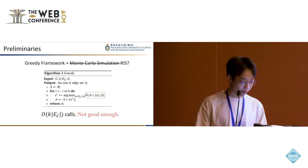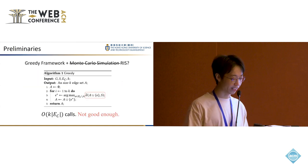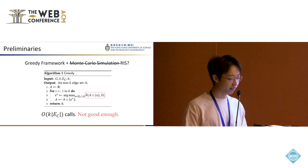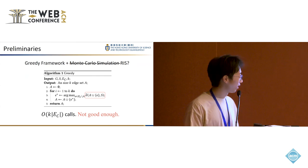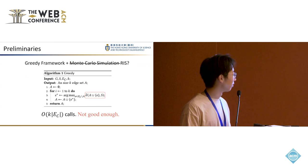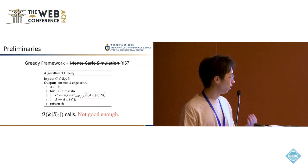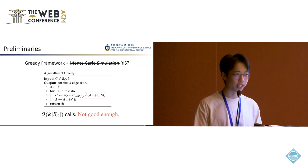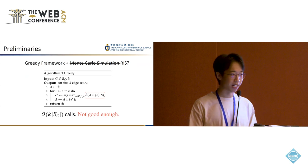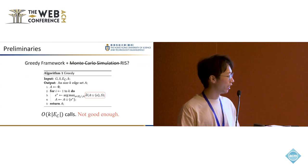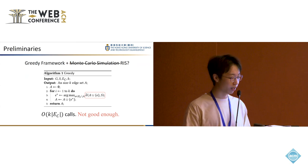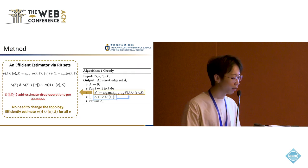With this, a trivial idea is to replace the estimator by RIS, right? However, it is still unacceptable because we need a lot of calls of the RIS sampling process, which is K times the size of the candidate set. This is not good enough, so we need to find a more elegant way to integrate RIS with the greedy framework.